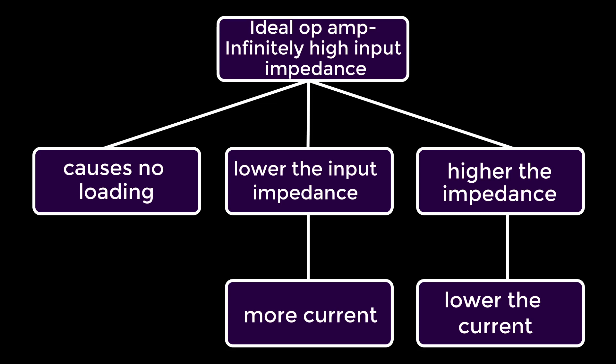The lower the input impedance, the more current that an op-amp will draw. The higher the impedance, the lower the current that an op-amp will draw. We want high input impedance so that the op-amp doesn't disturb the original circuit by pulling current from it. To do this, we need infinitely high input impedance.